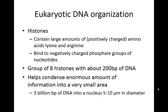In general, we find a group of about eight histones with about 200 base pairs of DNA. This is actually found in two groups of four histones — for a total of eight, or the octet. One of the important points is that they help to condense an enormous amount of information into a very small area.